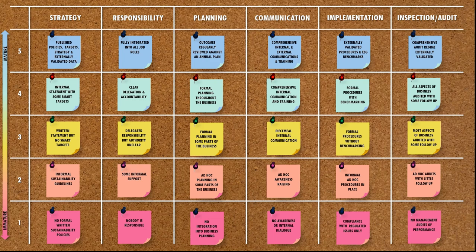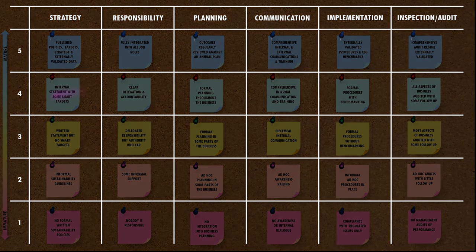Choose the box with the closest match. If your current activities don't quite match the statements given in the boxes, you can also consider where you'd like to get to in a few months or a year's time and give yourself a target score for each of the categories.